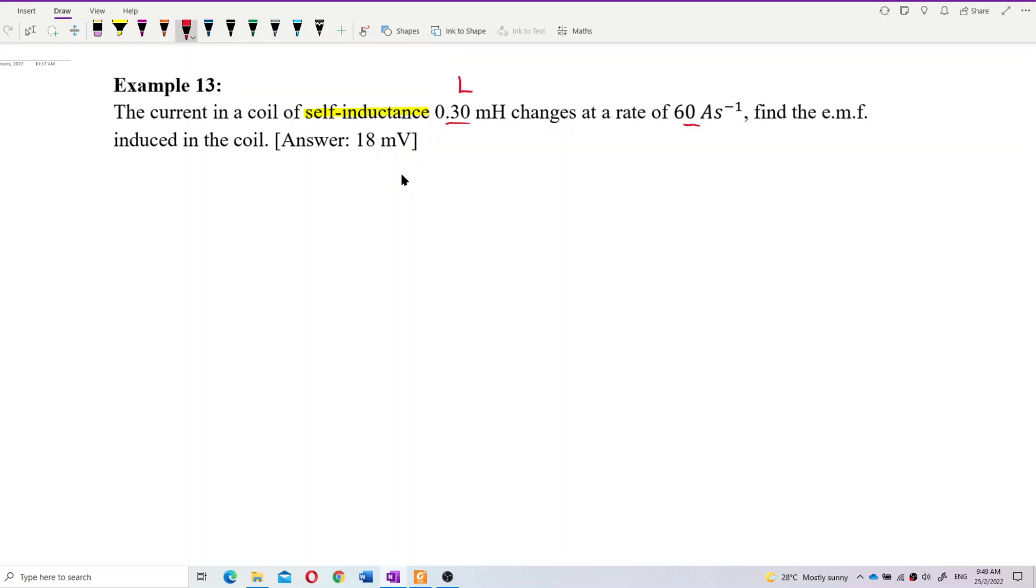If you look at this unit, ampere per second, it's current over time. So this is di/dt. Current changes at the rate - current is I and rate is about time, so di/dt is 60 ampere per second, the rate of change of current.